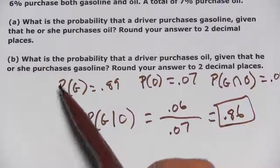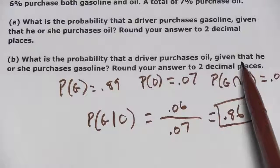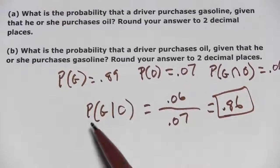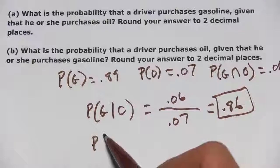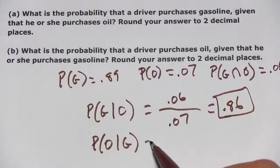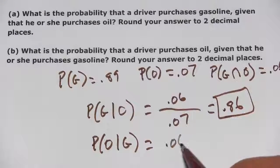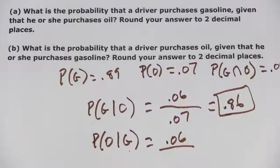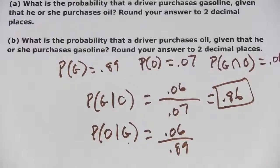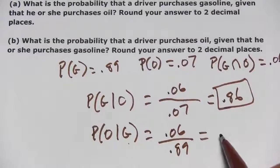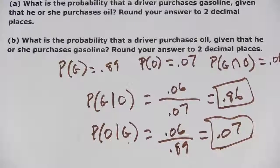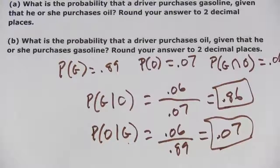Let's look at part B. It says: what is the probability that a driver purchases oil given that he or she purchased gasoline? So again it's the same thing, but flipped around — the probability of purchasing oil given you've purchased gasoline. It's the intersection of the two divided by the given, and the given here is 0.89. And that is about 0.07. So that's a little bit of work with conditional probability.